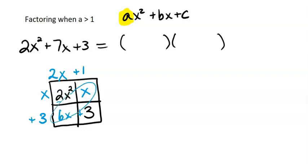Do these two terms now add to give me my positive 7? And they do. 6x plus x equals 7x. So that means I put that 1 and the 3 in the right place for the first try. That's great.